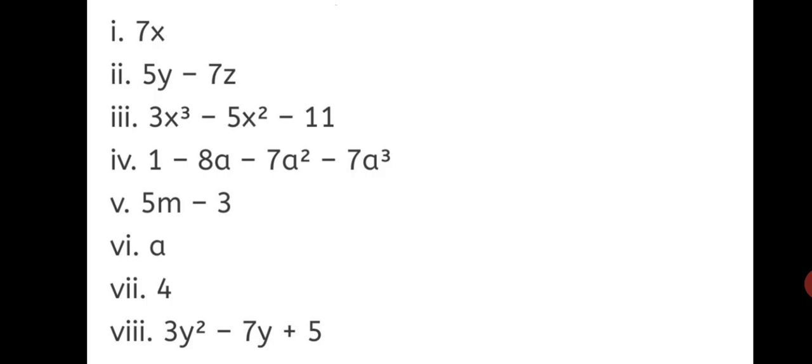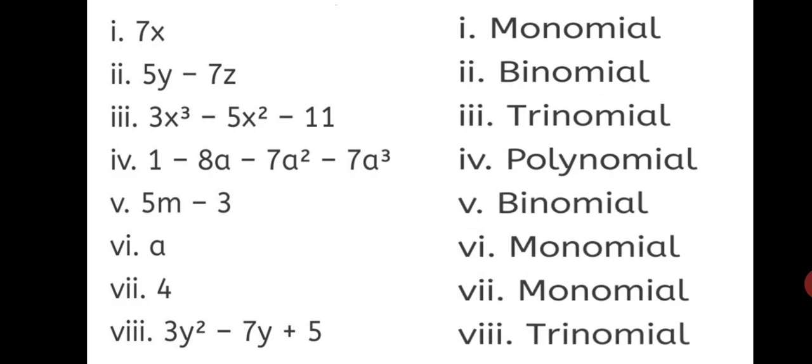So, let's have a look at the fourth one, 1 minus 80 minus 7a square minus 7a cube. How many terms can you see? Four terms. So, it will be a polynomial. Let's have a look. First one is a monomial, second binomial, third trinomial and fourth polynomial. So, let's solve the remaining questions.